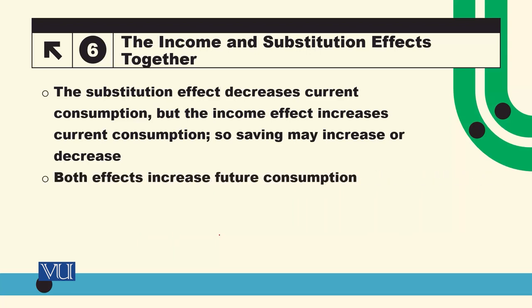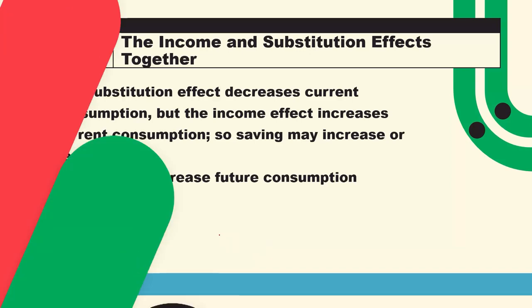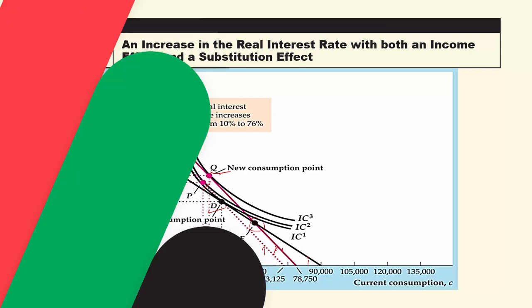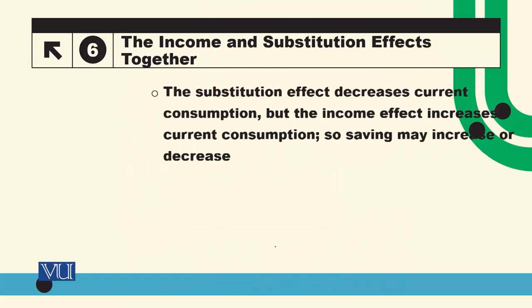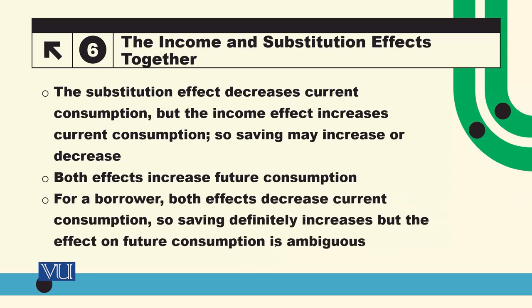And both effects increase future consumption. For a borrower, both effects decrease current consumption. Borrower کے case میں equilibrium point E سے D کی بجائے upper-left part پر ہوگا — net borrower ہوگا۔ اس صورت میں diagram draw کر کے ہم سمجھ سکتے ہیں کہ borrower کی صورت میں both effects will decrease current consumption۔